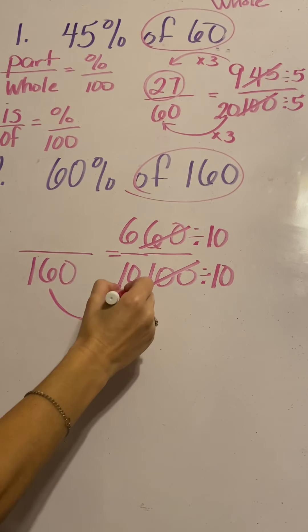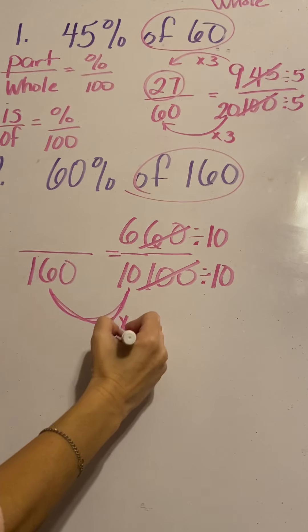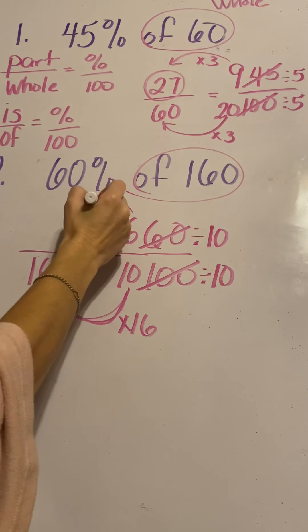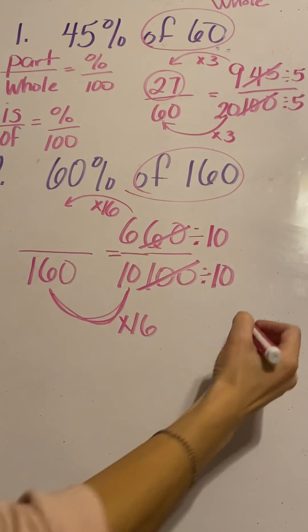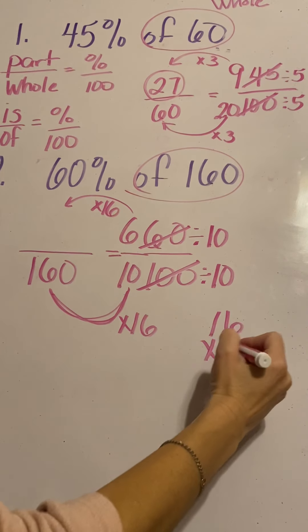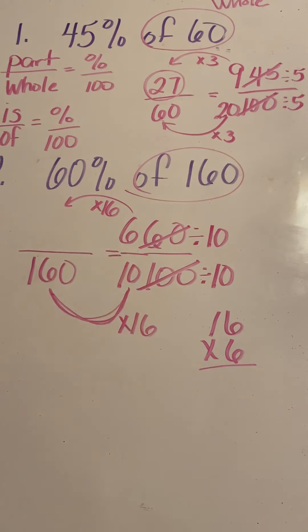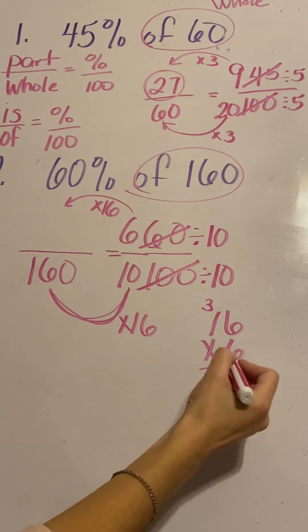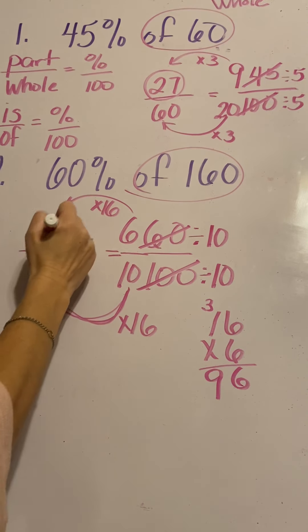Now if I look at this relationship, 10 times 16 is 160. So I'm going to multiply 6 times 16. I don't really know that. Actually, I do now because I've done this problem like 5 times a day. But anyway, 6 times 6 is 36. And 6 times 1 is 6 plus 3 is 9. So the answer is 96.